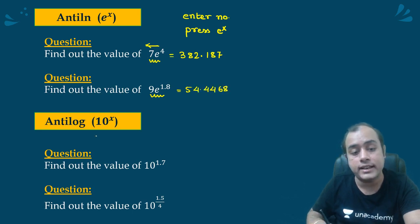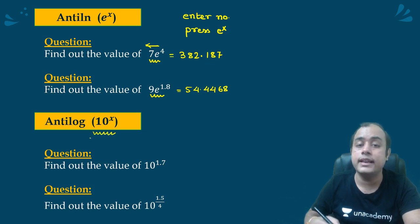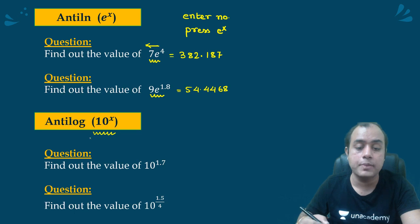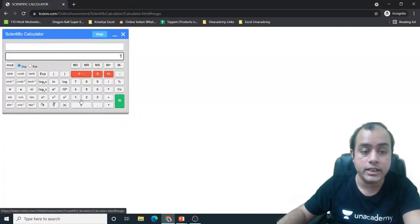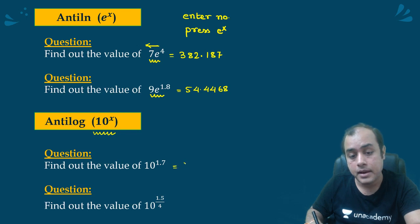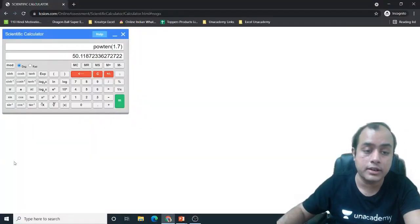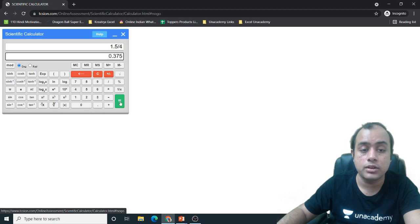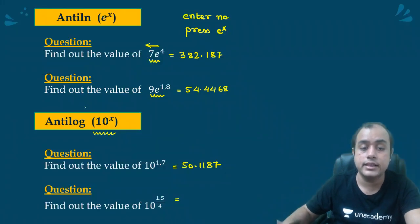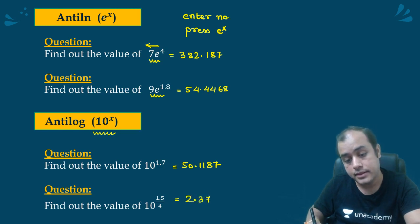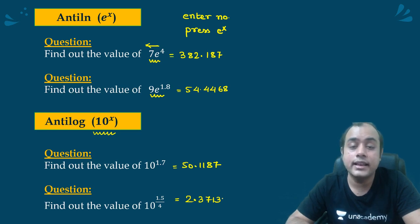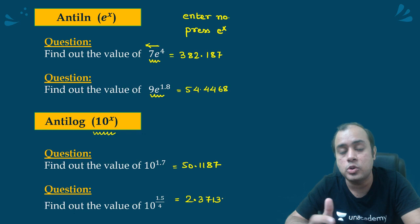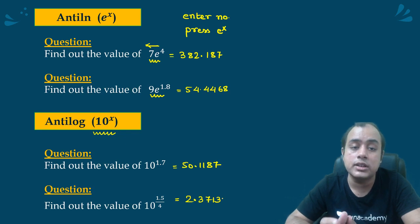Similar process you can do to evaluate 10 to the power x. The only thing, instead of e to the power x, you will have to press 10 to the power x. 10 to the power 1.7. Then the first thing I need to evaluate 1.7, 10. 50.1187. What about 10 to the power 1.5 by 4? First I will calculate 1.5 by 4, then 10. 2.3713. See how easy is this? The major concern here is we are actually used to calculating from left to right in our conventional offline calculator. But in gate calculator it actually asks you to input the value from right to left.